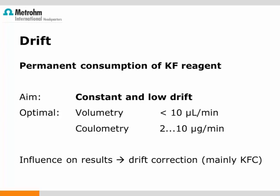Especially in coulometry, high drift values do have an influence on results. If you have a drift of 20 µg/min and the titration takes one minute, then 20 µg of water are added to the water content of the sample, which can make quite a big difference. Therefore, we use drift correction: the drift at the start of a titration is multiplied by the determination time, and the resulting amount is subtracted from the result you receive at the end of the titration.